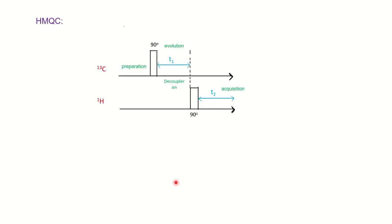Now we will see the pulse sequence for HMQC. You can notice a preparation period, an evolution period where the decoupler is on, and an acquisition period. The data is recorded from the H1 channel, which is a sensitive nucleus. Magnetization develops during the evolution period and finally transforms into the proton channel — the sensitive proton nucleus is used to detect the signals. The result is a high-resolution 2D spectrum with an 8-fold increased sensitivity in case of HMQC, because the spectrum is recorded from the sensitive nucleus.